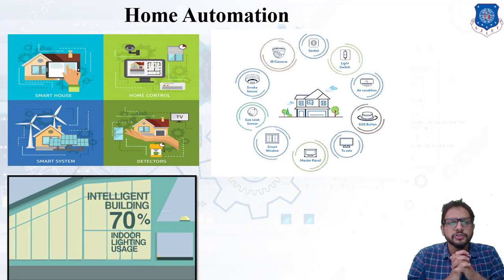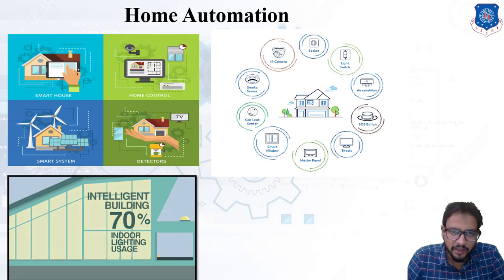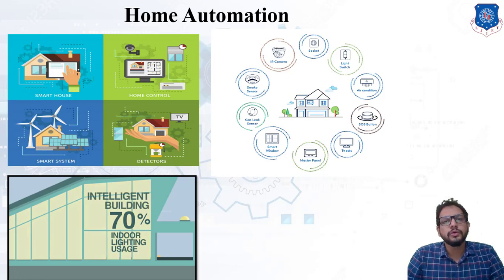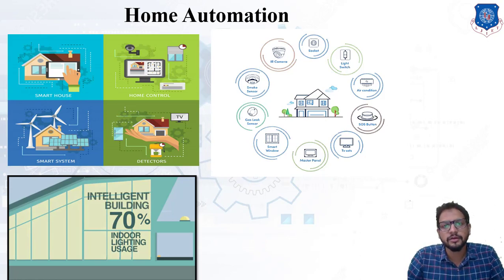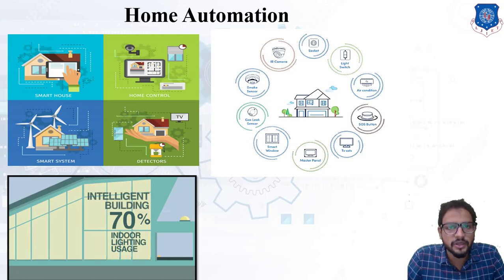Now, home automation — as the name itself suggests — means we need to convert our home into a smart home, our building into a smart building. How can we do that? What characteristics do we need in order to convert to a smart home? Whatever appliances or devices we are using in our day-to-day life — why not connect these devices to the internet?